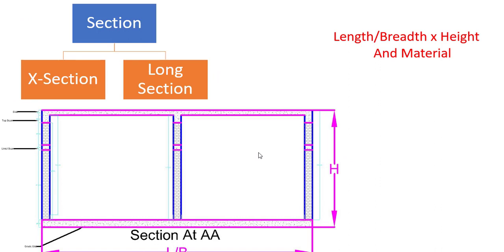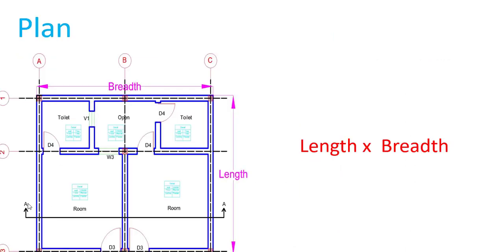Next is the section. There are two types: cross section and long section. From a cross section, we can get the breadth and the height of an object as well as the material used. From a long section, we can get the length and the height of the object and its material. Here you can see the cross section — we get breadth and height.